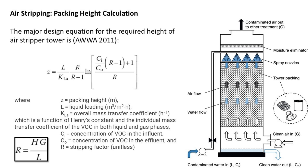Finally, let's look at one example for its design calculation. The major design equation for the required height of an air stripper tower is recommended in the AWWA design book. In this equation, Z is the packing height, L is the liquid loading, and KLA refers to the overall mass transfer coefficient, which is a function of Henry's constant and the individual mass transfer coefficients of the VOC in both liquid and gas phases. The influent and effluent concentrations of VOCs are also decisive. The R in the equation is called the stripping factor, a crucial parameter for determining the ability of an air stripper to remove a specific contaminant. The stripping factor R is affected by both the liquid-gas loading and the Henry's Law constant.